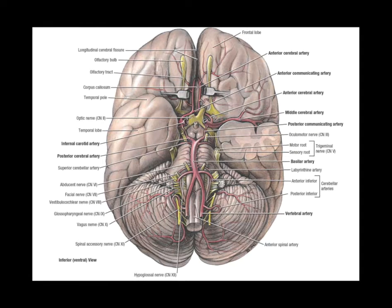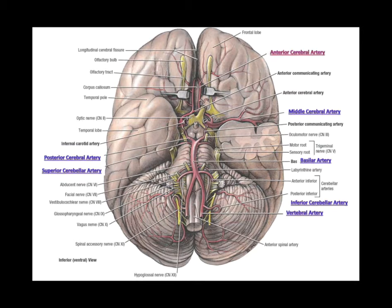Looking deeper at the brain, at the underbelly again, we see our Circle of Willis. In this overview I'm going to use a PowerPoint which I'm also posting on Blackboard for you. Certain areas are highlighted, so not only is this a good way for you to review the information but it's a good way for you to test yourself.